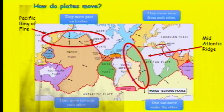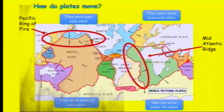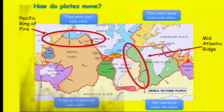For example, you could talk about the African plate and the South American plate moving away from each other at a constructive plate boundary — this forms the mid-Atlantic ridge. On the other hand you could talk about the North American plate and the Pacific plate moving alongside each other at a conservative plate boundary, or the Philippine plate and the Eurasian plate coming together at a destructive plate boundary.